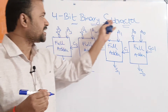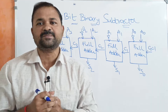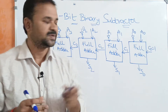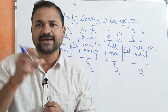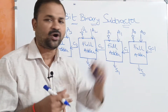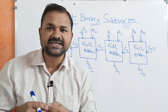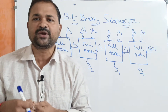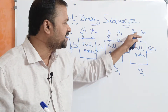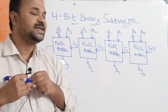Let us discuss the 4-bit binary subtractor. It is mainly useful to subtract two binary numbers whose size is 4 bits. We have two binary numbers: the first binary number is represented by A, which contains 4 bits — A3, A2, A1, A0 — where A3 is the most significant bit and A0 is the least significant bit. The second binary number is denoted by B, which contains 4 bits — B3, B2, B1, B0 — where B3 is the most significant bit and B0 is the least significant bit.